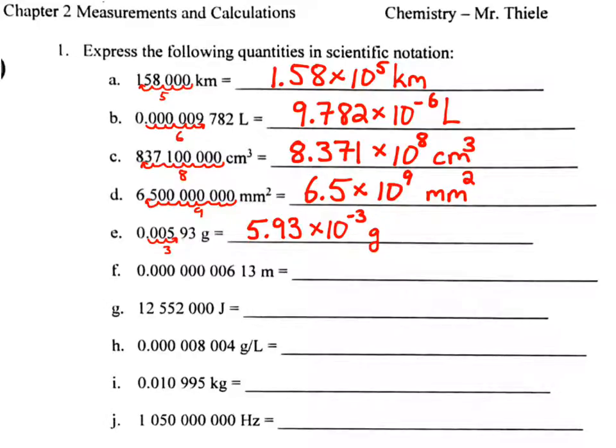Next number is much smaller than 1, so again, we are moving our decimal point to the right until just after the six. That's nine places, so we have 6.13 times 10 to the negative nine.